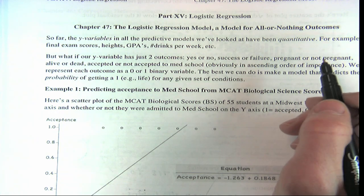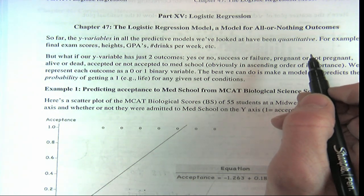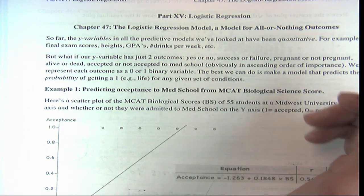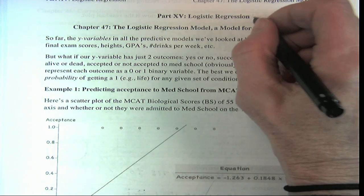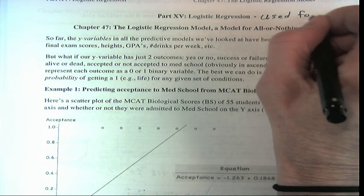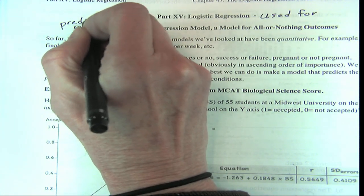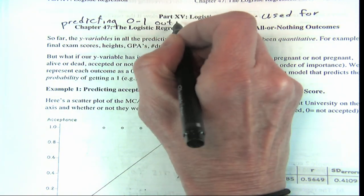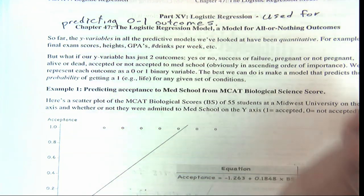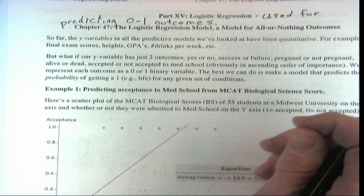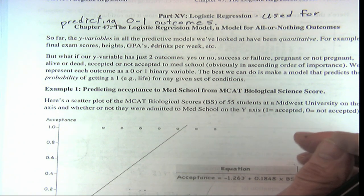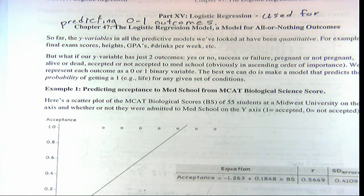So far all our y variables have been quantitative, but now we're going to look at y variables that are 0, 1 variables. This is used for predicting 0, 1 outcomes — binary outcomes, success or failure, life or death, passing or failing — anything you can code as zeros or ones, anything you can answer with yes or no. That's your y variable. Your x variable can be anything.